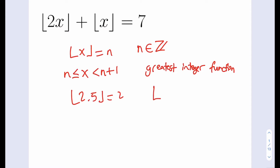With negative values, it's just a little different. If we have negative 3.4, the floor value of negative 3.4 is not negative 3, but it's negative 4. Because it needs to be less than or equal to the number, and the answer always needs to be an integer.